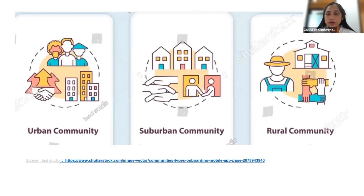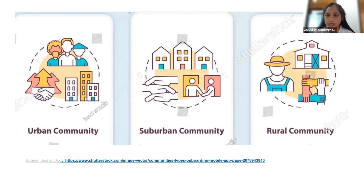You may see three pictures showing three different community settings. The first is urban community, the second is sub-urban community, and the last is rural community. These three pictures show that there are three key elements in any community — whether urban, sub-urban, or rural — which are: people, system, and the level of engagement and participation.